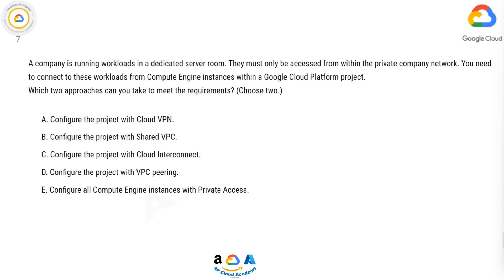A. Configure the project with Cloud VPN. B. Configure the project with shared VPC. C. Configure the project with Cloud Interconnect. D. Configure the project with VPC peering. E. Configure all Compute Engine instances with private access.